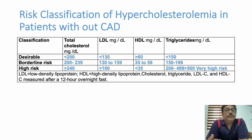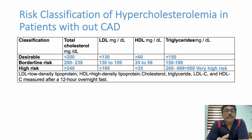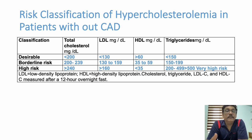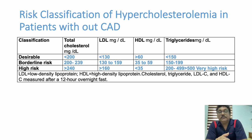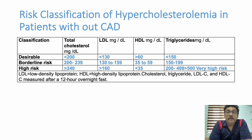Risk classification: desirable levels are total cholesterol less than 200, LDL less than 120, HDL more than 60, and triglycerides less than 150. Borderline risk is total cholesterol 200–239, LDL 130–159, HDL 35–59, triglycerides 150–199. High risk is total cholesterol more than 240, LDL more than 160, HDL less than 35, triglycerides 200–500. However, even desirable levels can be abnormal when combined with uncontrolled diabetes, severe smoking, or severe stress.